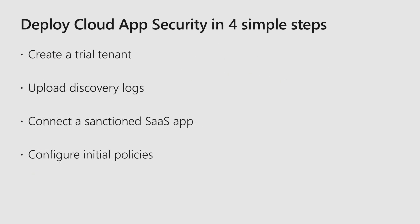In order to deploy Cloud App Security, there are four basic steps. Number one is to create a trial tenant — Cloud App Security is available as part of your E5 license, or you can sign up for a trial tenant. Once you have a trial tenant set up, you can upload your network firewall logs, either manually or through automatic uploads. We highly recommend configuring automatic log uploads — this can be done directly from firewalls, or you can have a server on-premises that collects logs from all of your devices and uploads them to Office 365 Cloud App Security.